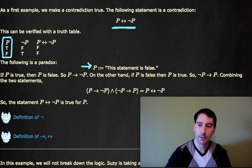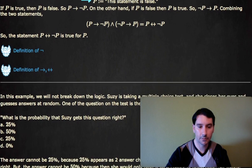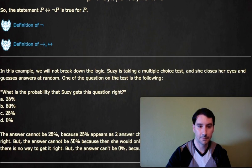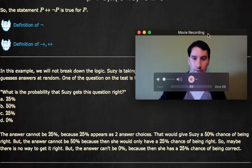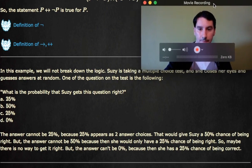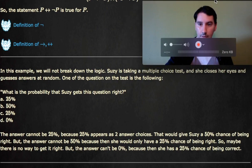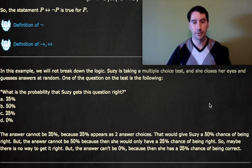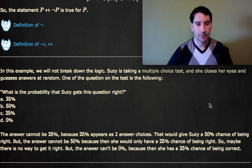Let's look at another example. In this one, we're not going to break down the logic, but these are kind of fun. So in this example, I'll try to drop myself somewhere where I'm still sort of on the screen, but now you can see the example. Susie's taking a multiple choice test, and she closes her eyes and just guesses answers at random. One of the questions on the test is the following.